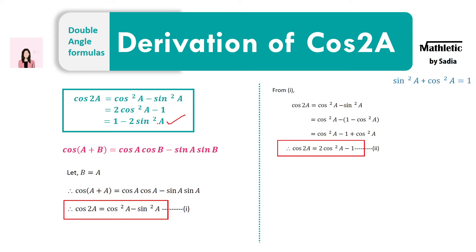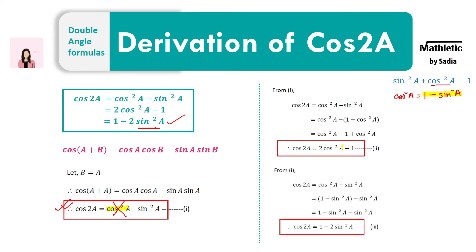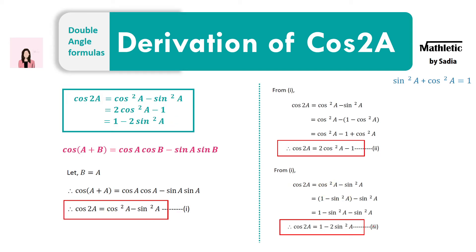The last one is 1 minus 2 sine squared a, in terms of sine only. Using the same first formula and the identity cos squared a equals 1 minus sine squared a, I replace cos squared a with 1 minus sine squared a. From equation 1, cos squared a is replaced by 1 minus sine squared a. Simplifying and removing the bracket, we have sine squared minus sine squared, which gives us 2 sine squared a. So the final formula is cos 2a equals 1 minus 2 sine squared a, which is the third one.